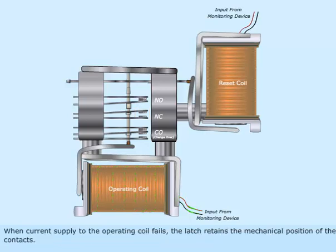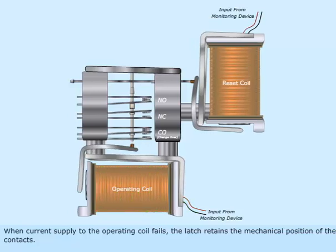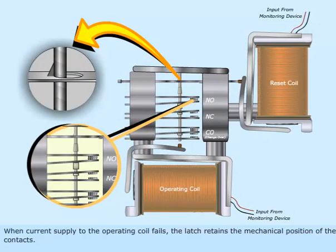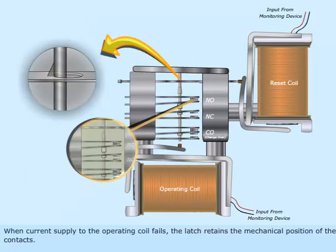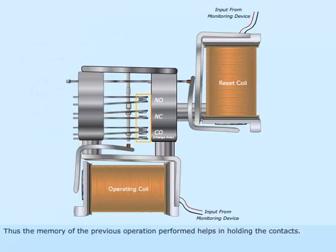When current supply to the operating coil fails, the latch retains the mechanical position of the contacts. Thus, the memory of the previous operation performed helps in holding the contacts.